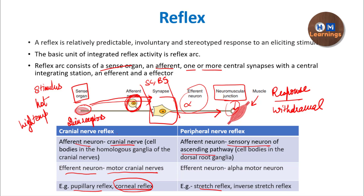Another important point: we tend to think that reflexes are involuntary, but actually reflexes are modifiable. The descending inputs — that is the upper motor neuron — the motor cranial nerve as lower motor neuron and the alpha motor neuron as lower motor neuron are not only receiving inputs from their afferents but also receiving inputs from the cortex by the upper motor neuron. So basically they are modifiable. If a person is trained that however hot it is, they are not supposed to withdraw their hand, that person can train themselves. Don't forget that reflexes are modifiable — mostly these reflexes can be elicited, but they are modifiable.